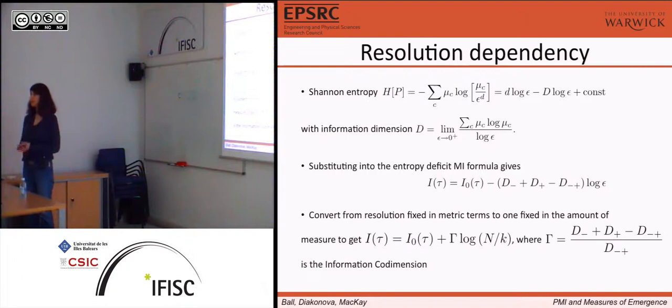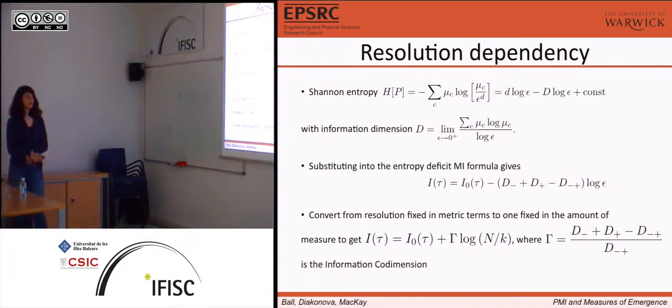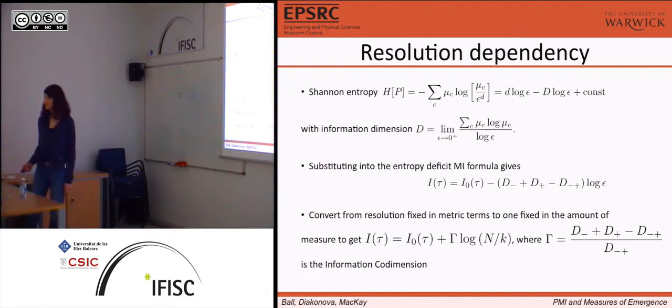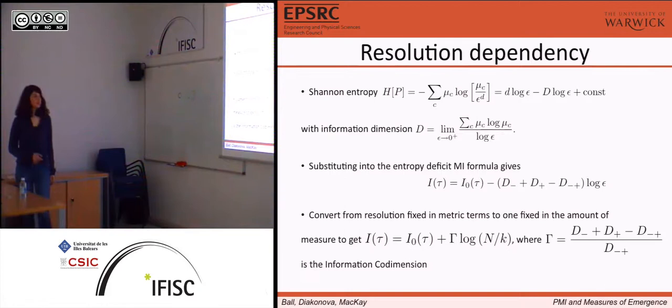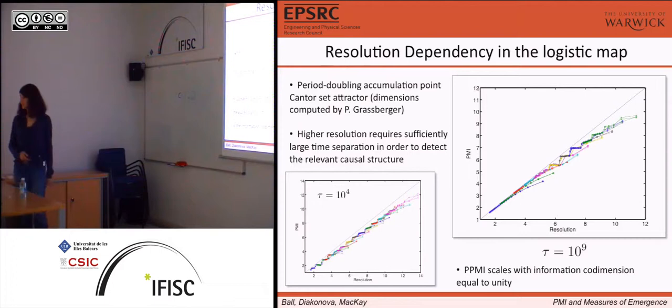PMI should actually vary as a function of the logarithm of the discretization. So it should grow with discretization at a rate defined by gamma. We turn gamma into something we call information co-dimension — a sort of relative deficit in the information dimensions of the marginals and the information dimension of the joint. It sort of mimics, in a faraway way, the definition of mutual information. So the slopes should be equal to this information co-dimension gamma.